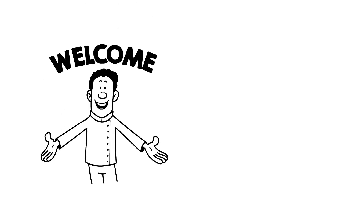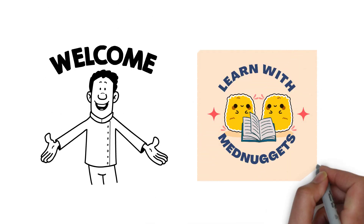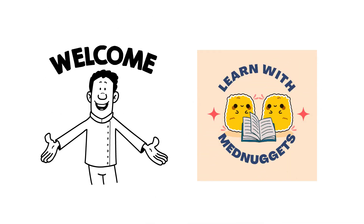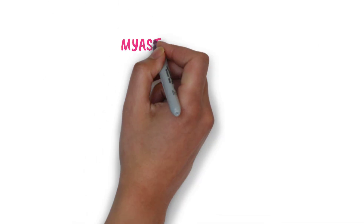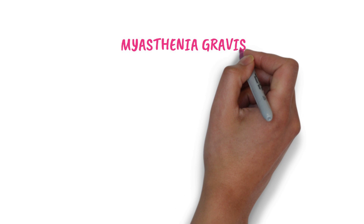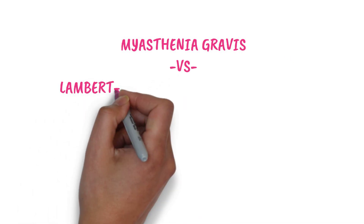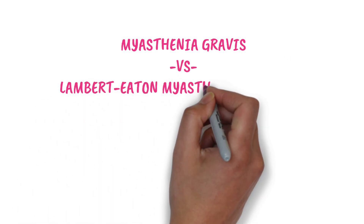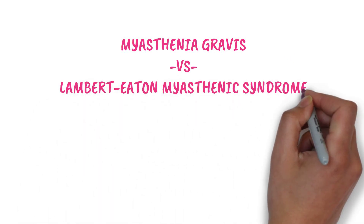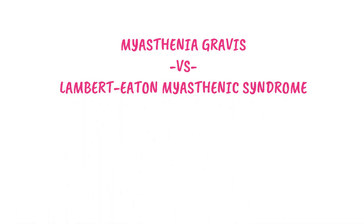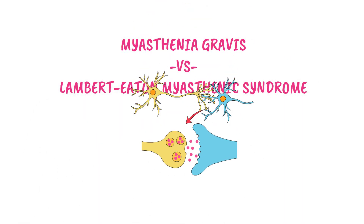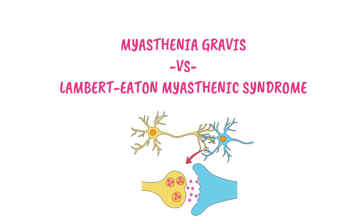Welcome back to Learn with Med Nuggets. In this video, we will teach you how to differentiate two neuromuscular junction disorders: Myasthenia Gravis and Lambert-Eaton Myasthenic Syndrome.